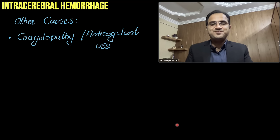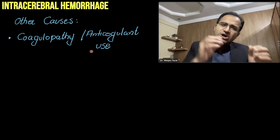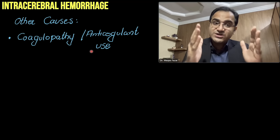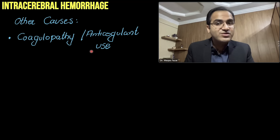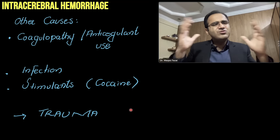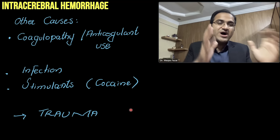Other causes include coagulopathy and anticoagulant use. If a patient is on anticoagulants like warfarin or heparin and develops severe headache, this must be very concerning — there is high risk of intracerebral hemorrhage due to blood thinning. Infections, stimulant drugs like cocaine, and trauma can also cause ICH. Remember: the most common cause is spontaneous non-traumatic hemorrhage due to hypertension; in elderly patients, cerebral amyloid angiopathy; and in children, AVMs.